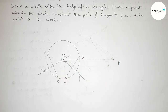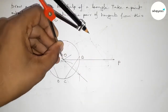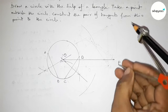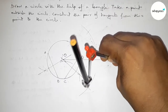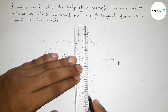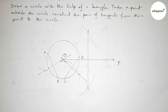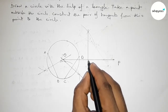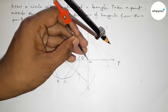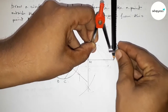Now we have to bisect the line OP. Taking greater than half of OP and drawing an arc by this way. Putting the compass here and cutting here and here. Both curves intersect at two points. Joining this bisects the line OP at a point — taking this as point M.